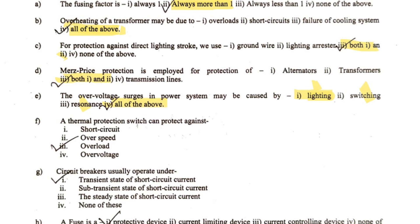The next question: a thermal protection switch can protect against — short circuit, over speed, overload, or over voltage? A thermal protection switch operates when the current flowing is above the rated current but not as abnormally high as a short circuit current. So it can provide protection for overload, but not for short circuit or any other kind of fault. Option three — overload — is the correct answer.